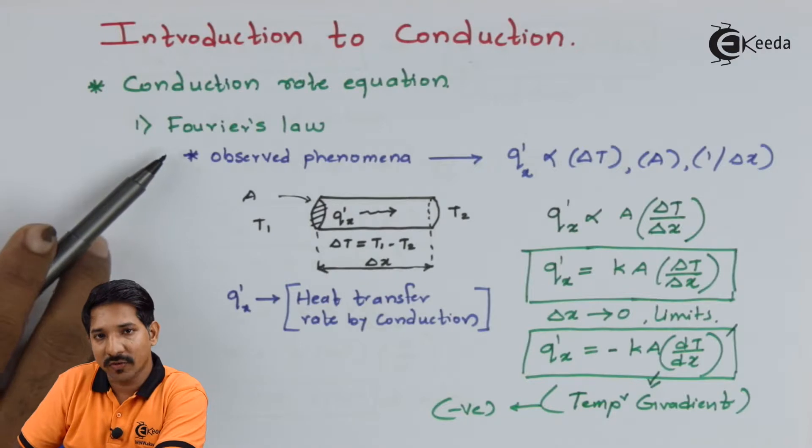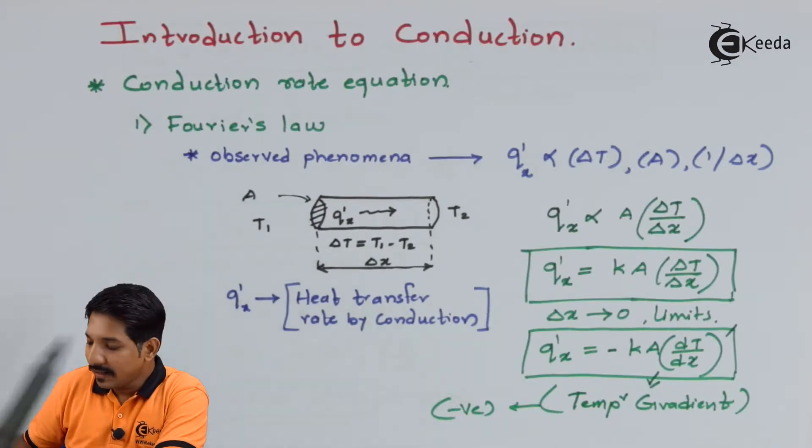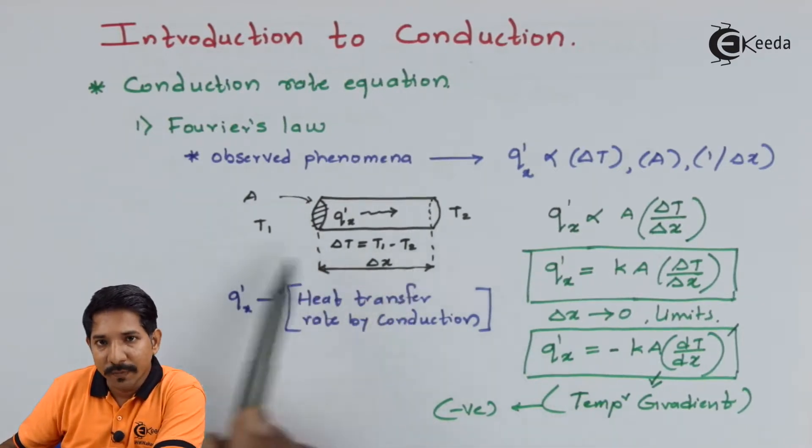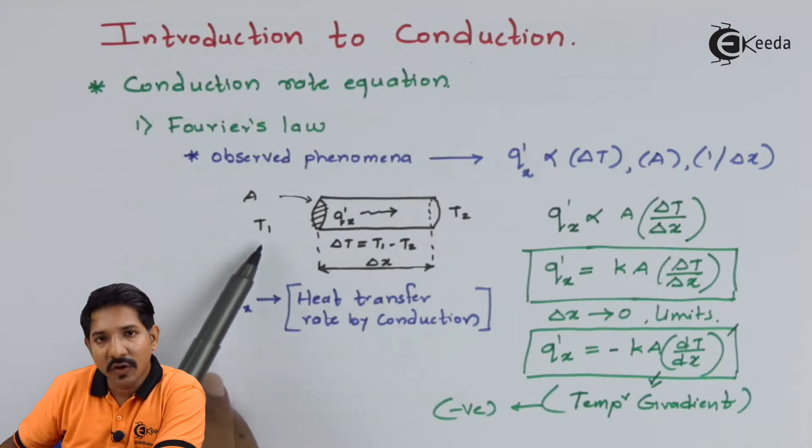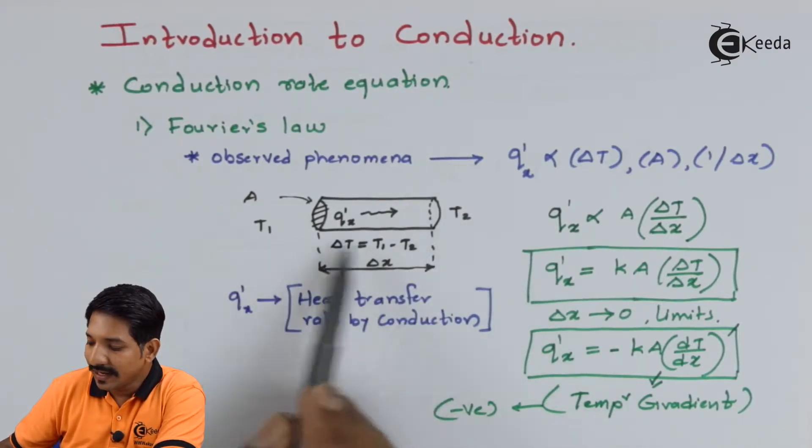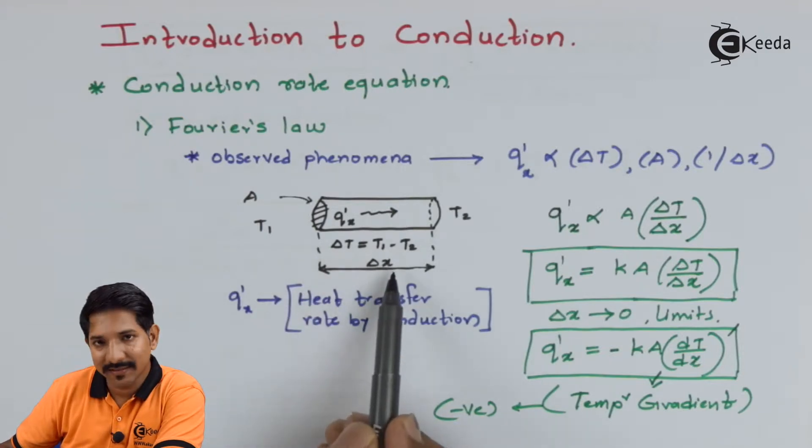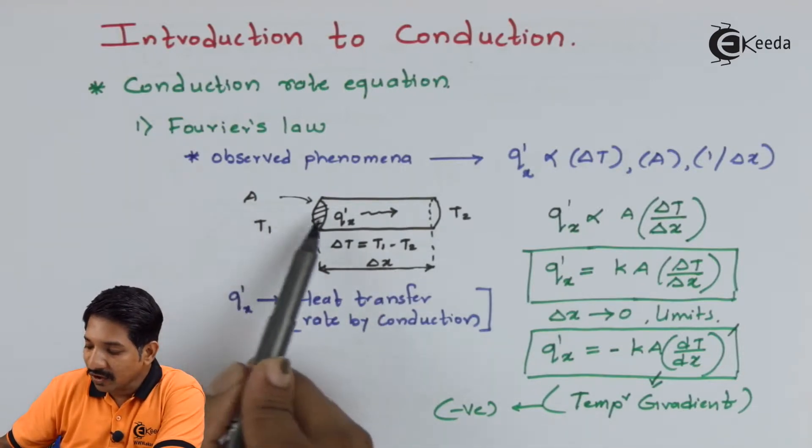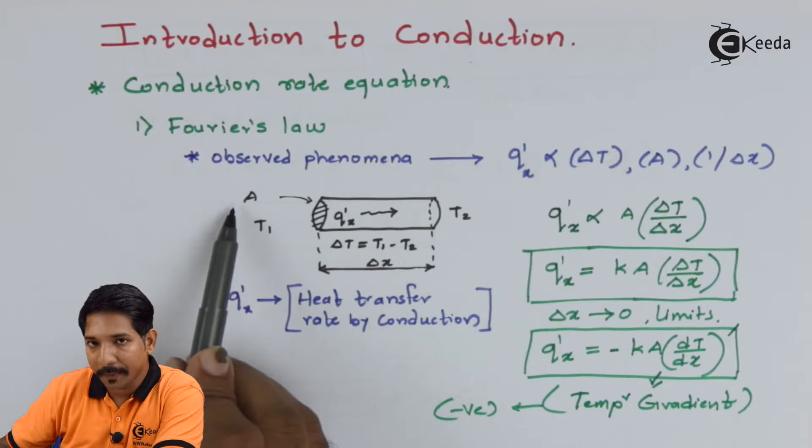That equation we call as Fourier's law. Let us consider a tube. To the one end we have got T1 temperature and other end we have got temperature T2. The length of the tube is delta x. Then the cross section area of the tube is A.